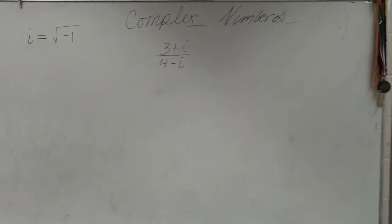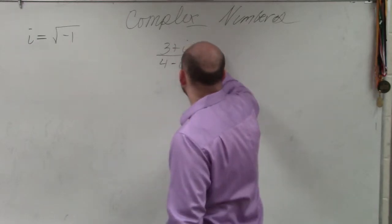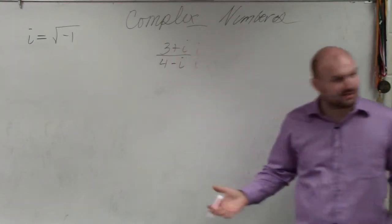In this case, we have 3 plus i divided by 4 minus i. The most common mistake that students make in this case is to say, hey, in the last example, you multiply by i over i. So that's what we're going to do.